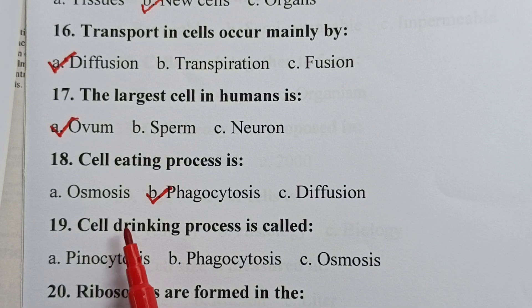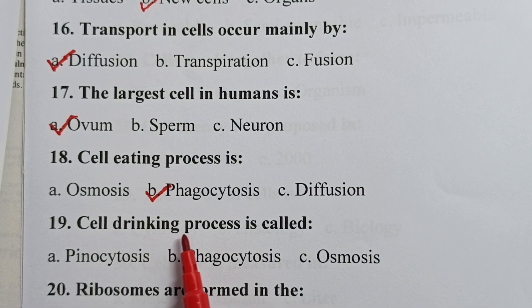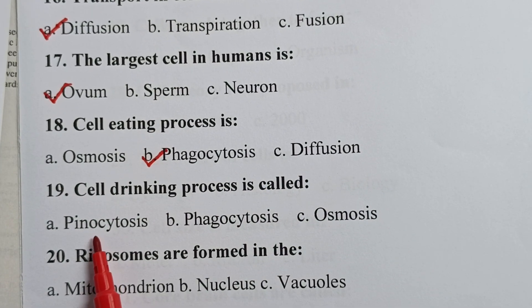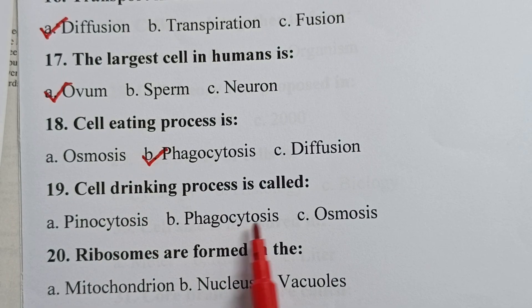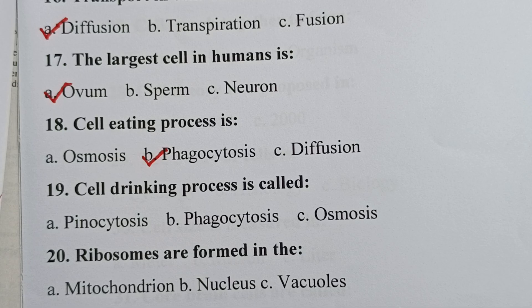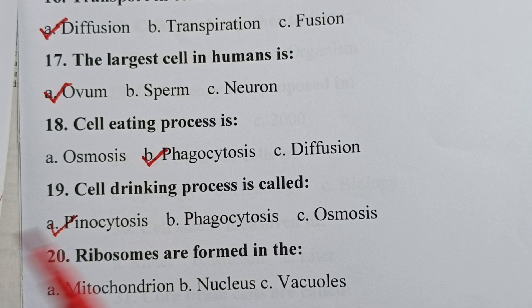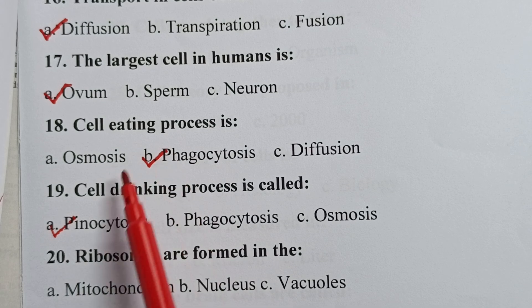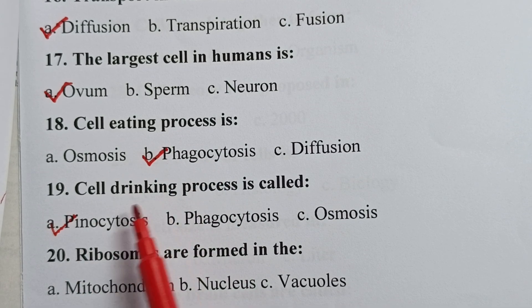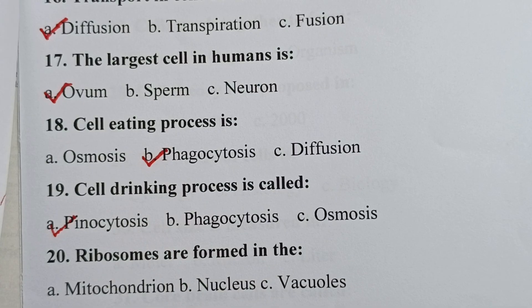Question nineteen: the cell drinking process is called — is it pinocytosis, phagocytosis, or osmosis? Your correct answer is pinocytosis. So, cell eating is called phagocytosis, while cell drinking is called pinocytosis.